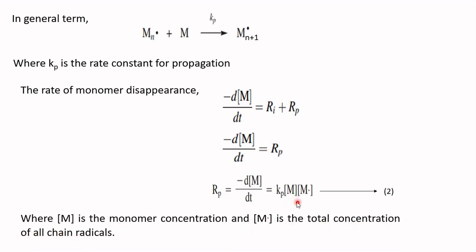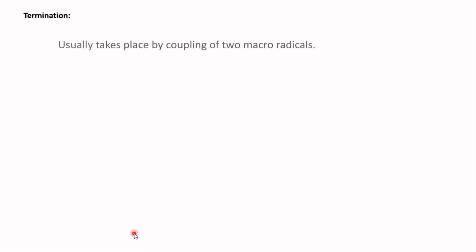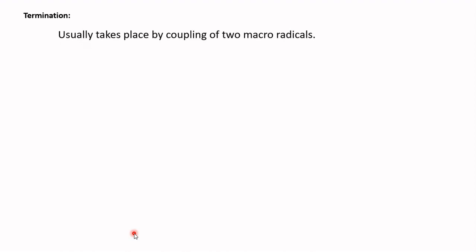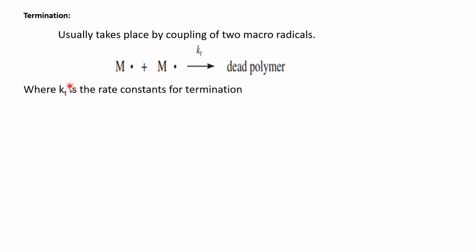The last step is termination. The termination of growing free radical chains usually takes place by coupling of two macro radicals. These two macro radicals couple together to give the dead polymer, where k_t is the rate constant for termination.